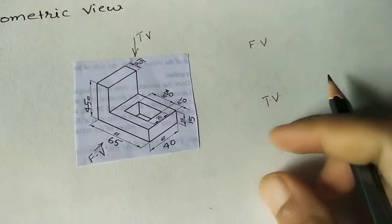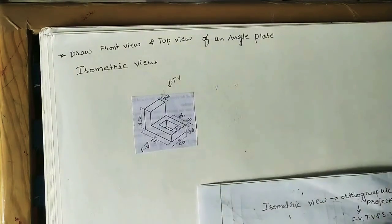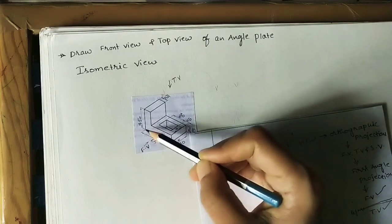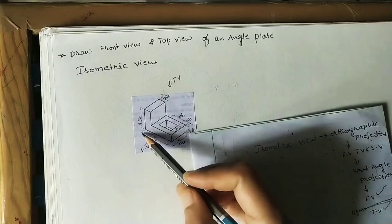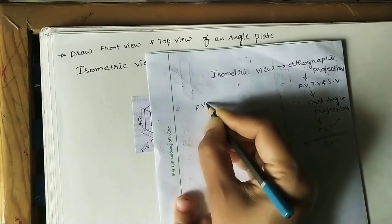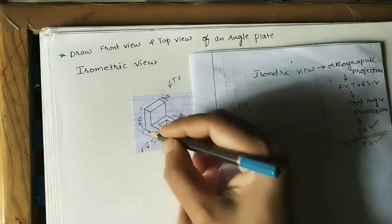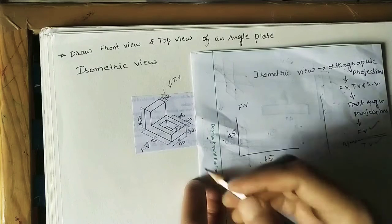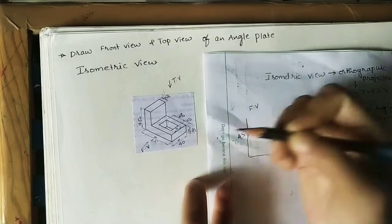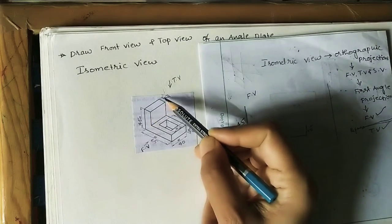Let me do a rough front view and top view first, then we will draw them properly using instruments. In the front view you can see an L-shape. The height of the L-shape is 45 mm and the width is 65 mm. The thickness on this side is 15 mm, and since it is a parallel box, the other thickness is also 15 mm.